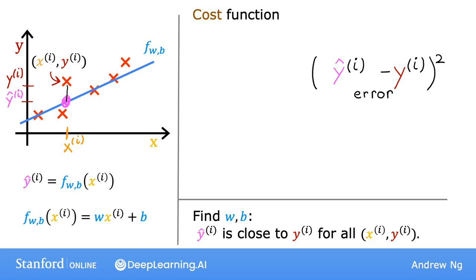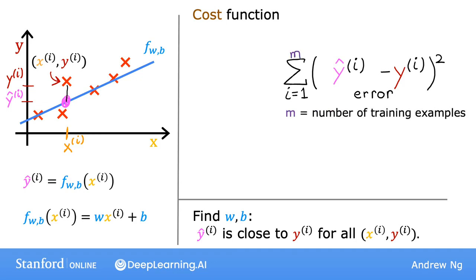We want to measure the error across the entire training set, so let's sum up the squared errors. We'll sum from i equals 1, 2, 3, all the way up to m, where m is the number of training examples — 47 for this dataset. Notice that if we have more training examples, the cost function calculates a bigger number. So, to build a cost function that doesn't automatically get bigger as the training set size gets larger, by convention we compute the average squared error by dividing by m. By further convention in machine learning, the cost function divides by 2 times m. The extra division by 2 is just meant to make some of our later calculations a little bit neater.